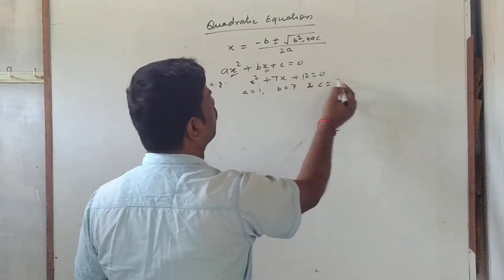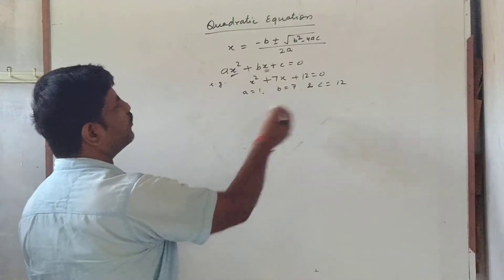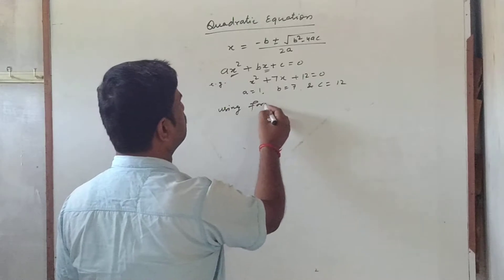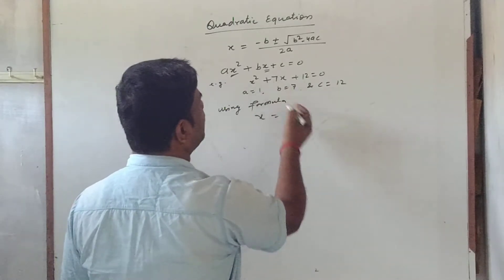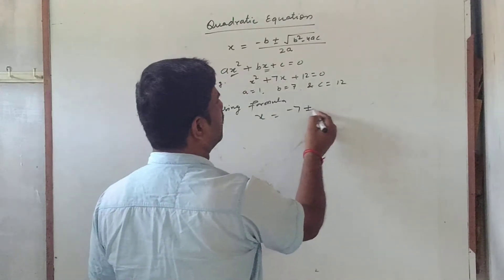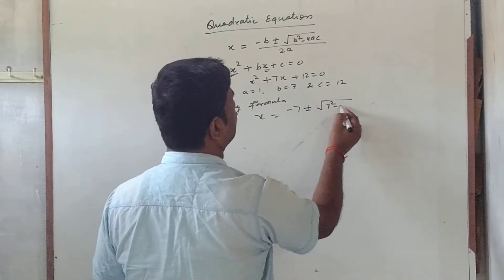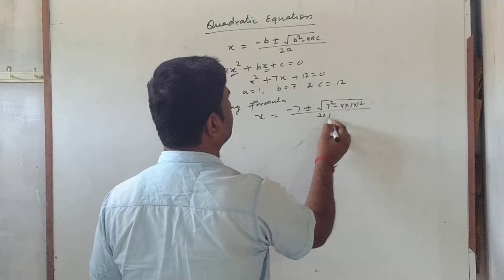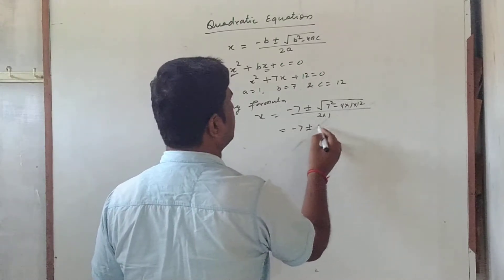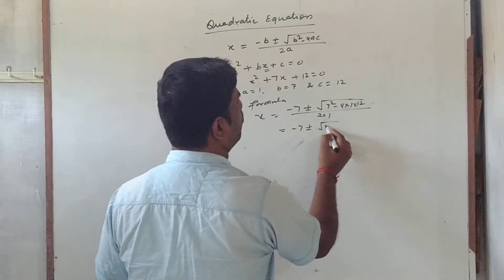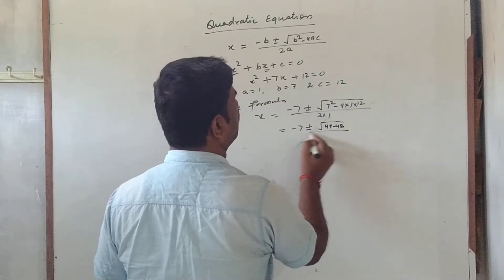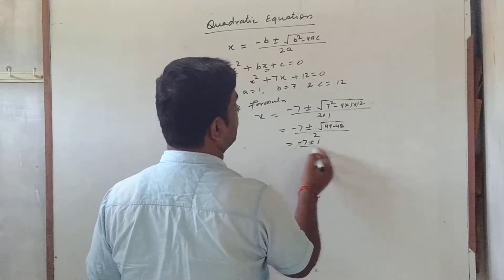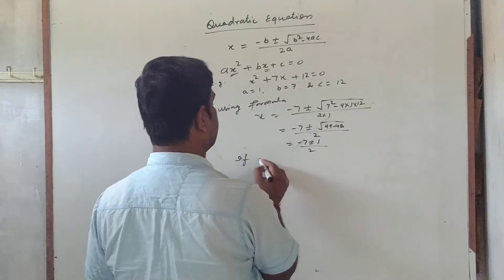Using the formula, x = (-b ± √(b² - 4ac)) / 2a. Substituting the values: x = (-7 ± √(7² - 4×1×12)) / (2×1), which gives x = (-7 ± √(49 - 48)) / 2, that is x = (-7 ± √1) / 2.